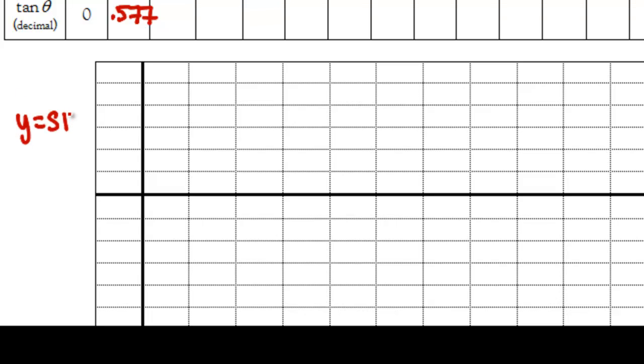On my y-axis, I'm going to draw y equals sine of theta. In other words, I'm plotting my ratio values. On the x-axis, I'm plotting my angle values in multiples of pi over 6.